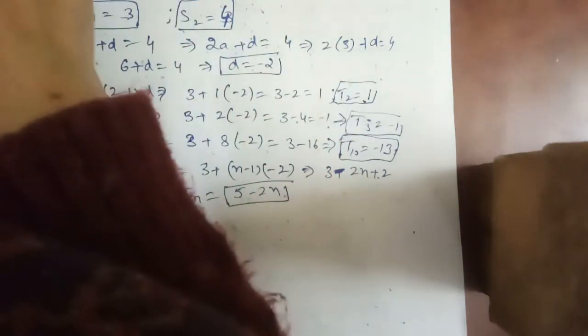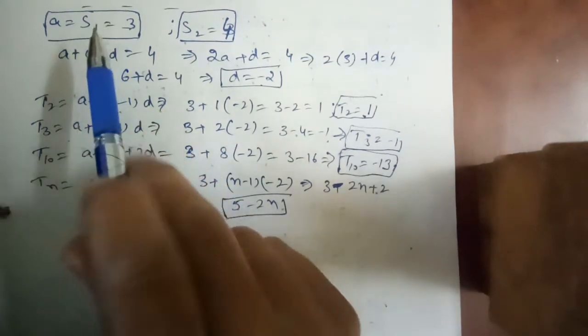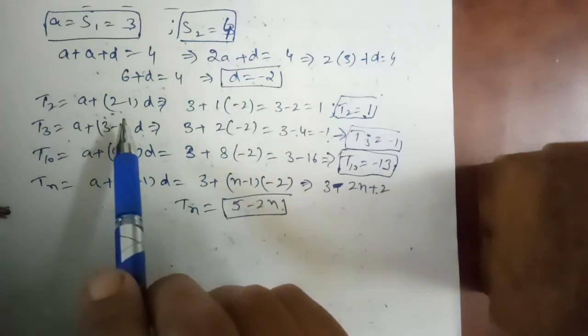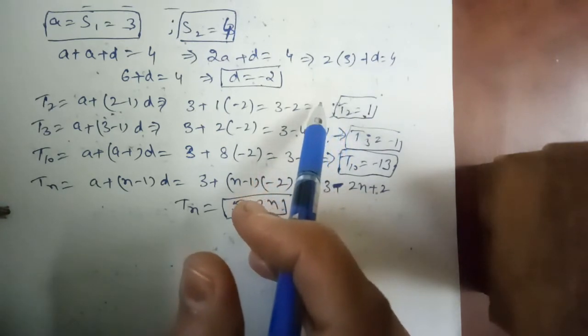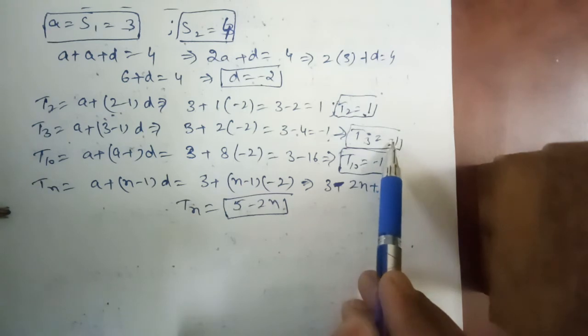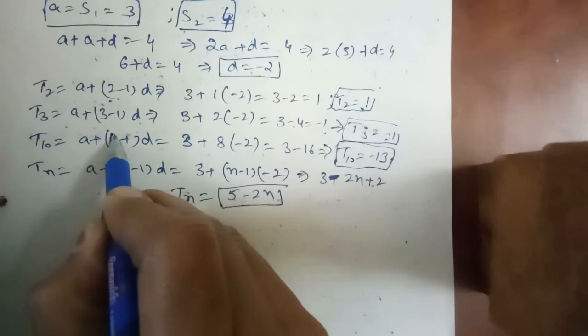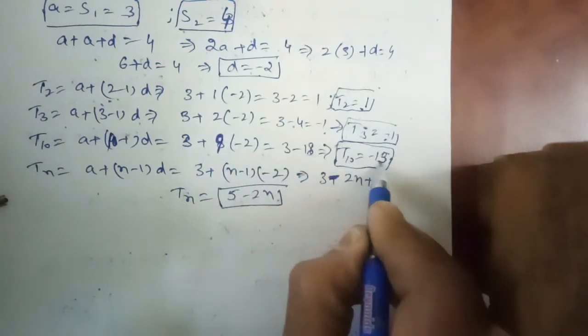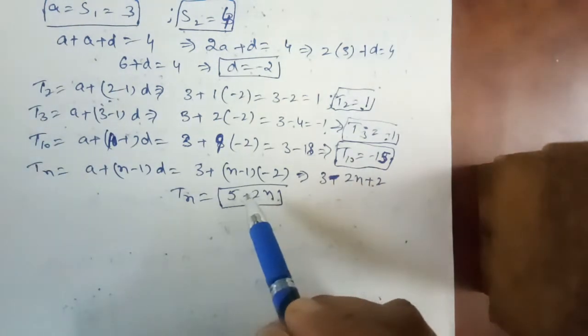Check the answer of this question. Question number 11: S1 is equal to 3, S2 is equal to 4. A2 is equal to 1, that is T2 is equal to 1. A3 is equal to minus 1, that is T3 is equal to minus 1. A10 is equal to minus 15. This is T10, 9 into minus 2, 18 minus 15, right. An is equal to 5 minus 2n. This is the answer of this question.